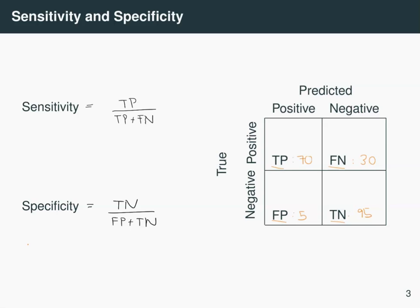Well, for sensitivity, we've got 70 true positives divided by 70 plus 30 false negatives. So that gives you a sensitivity of 0.7 or 70 percent.